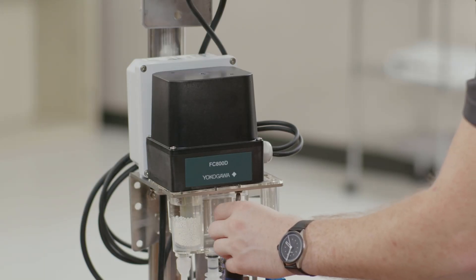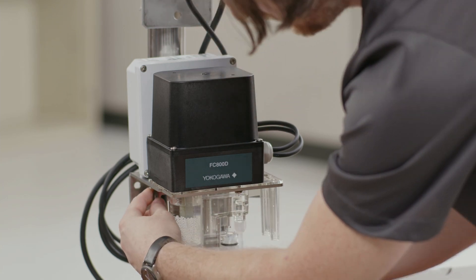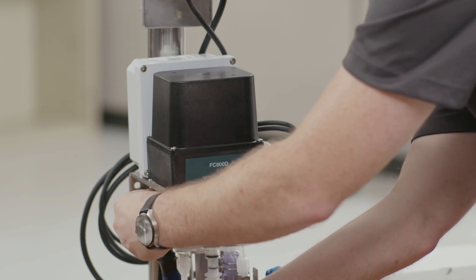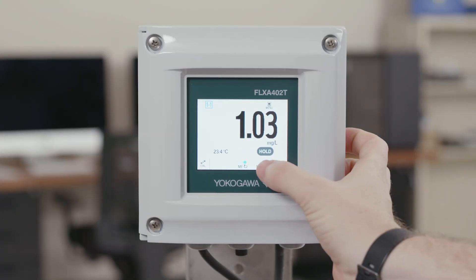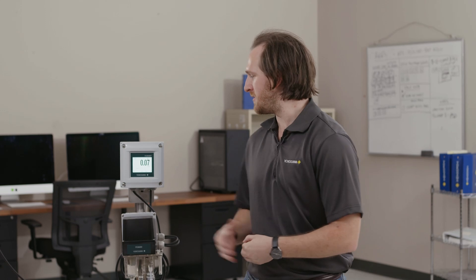Now that we've finished our calibration, we can make sure that the FC-800 measurement assembly is tightened down onto the flow cell and that all process valves are open. If this is the case you can go ahead and turn maintenance mode off and start measuring the process again. Thank you everyone. I hope you now understand how to calibrate your FC-800D. If you have any other questions or would like more information please visit yokogawa.com